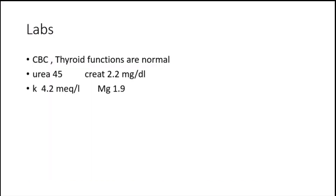Regarding labs, the patient has a normal CBC and normal thyroid function. Urea is 45 and creatinine is 2.2, indicating some degree of renal impairment, with normal electrolytes.